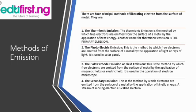Number three: the cold cathode emission, also called field emission. This is the method by which free electrons are emitted from the surface of the emitter by the application of a magnetic field or electric field. It is used in the operation of electron devices.